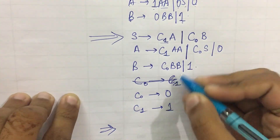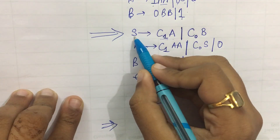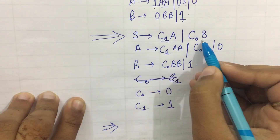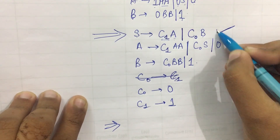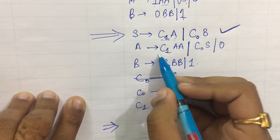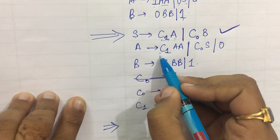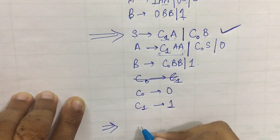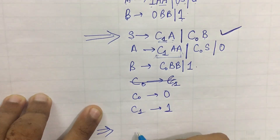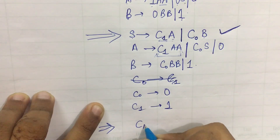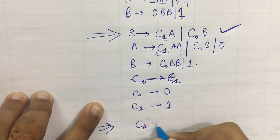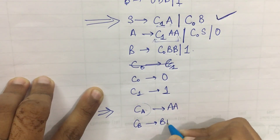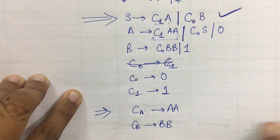Now we analyze: a non-terminal leading to a string of exactly two non-terminals is complete and in CNF. However, for the rule with three non-terminals, that is not yet in CNF. So I introduce another non-terminal CA → AA, and for another I take CB → BB.